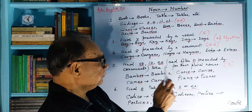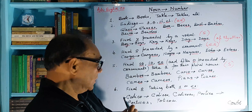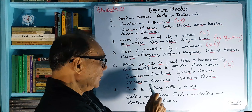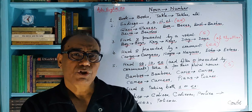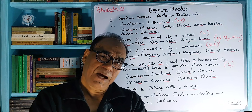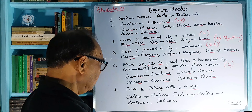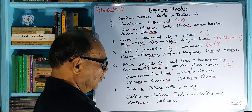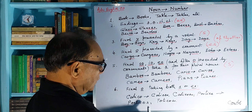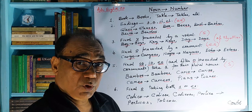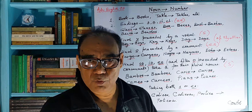Number six: final O taking both S or ES. If the word ends in O, then it may either take S or ES — there is enough liberty. For example, 'calico' can become 'calicos' or 'calicoes,' both are possible. 'Portico' can become 'porticos' or 'porticoes' — both OS and OES are acceptable.